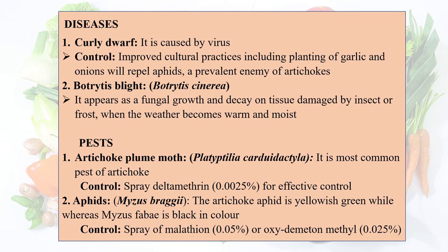Regarding pests: the artichoke plum moth is the most common pest, controlled by spraying deltamethrin at 0.0025%. Aphids include Myzus persicae, which is yellowish green, and Myzus fabiae, which is black in color. Control of aphids involves spraying malathion 0.05% or oxydemeton-methyl 0.025%.